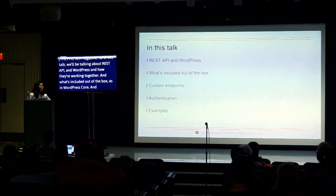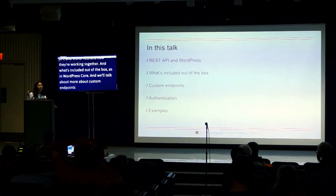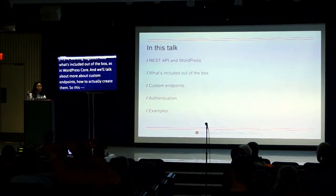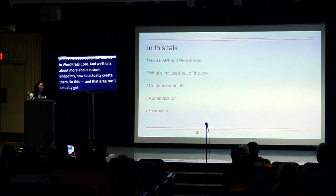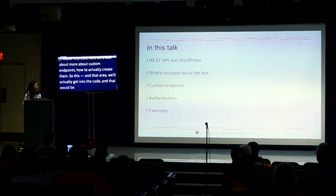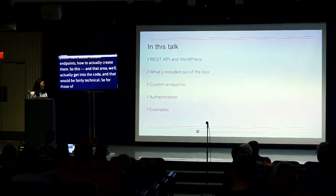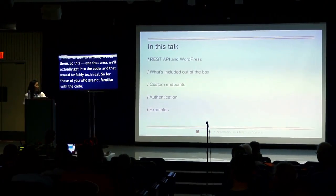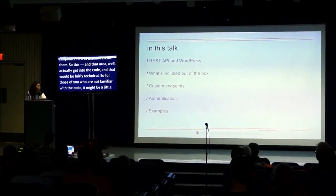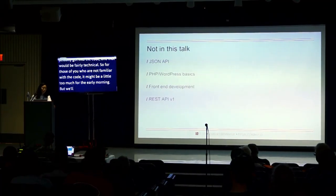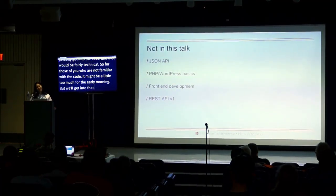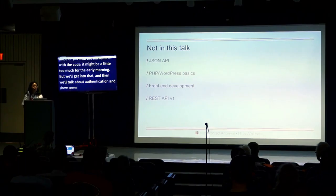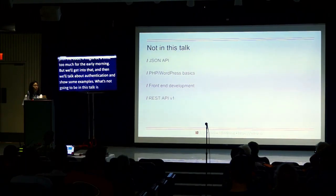In this talk, we'll be talking about REST API and WordPress — how they're working together and what's included out of the box in WordPress core. We'll also talk about custom endpoints and how to actually create them. We'll get into the code, so it's going to get a little technical. Bear with me on that. And we'll talk about authentication and show some examples.